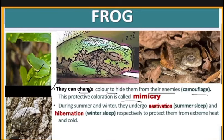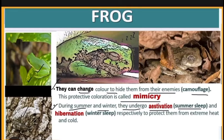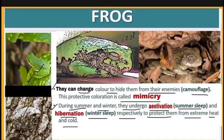This protective coloration is called mimicry. During summer and winter, frogs undergo estivation (summer sleep) and hibernation (winter sleep) respectively, to protect themselves from extreme heat and cold.